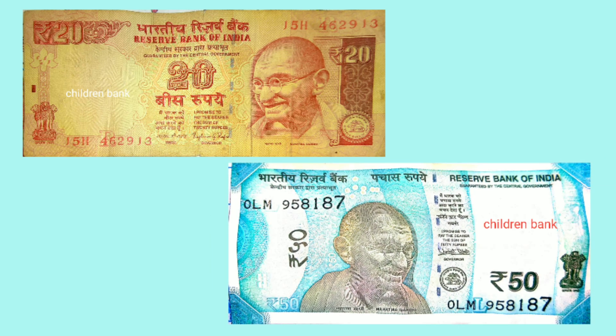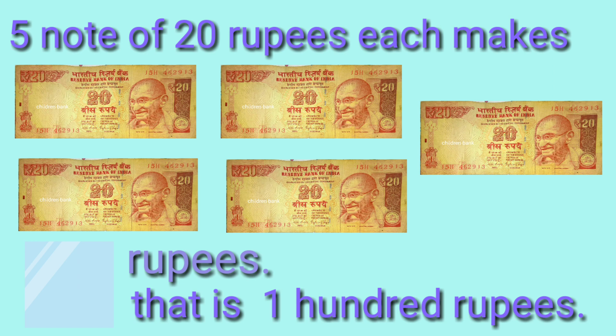Now we will learn this topic with the help of notes of 20 rupees and 50 rupees — 20 rupees and 50 rupees ch nut wapuruna apan notan cha sahya ni shikku yaat. 5 notes of 20 rupees each make 100 rupees — which rupiah cha pathnota? Answer: 100 rupees. That is 100 rupees — manje 100 rupees.